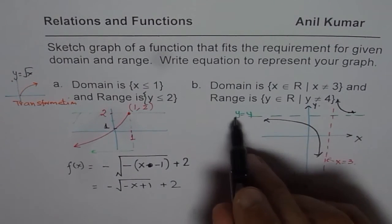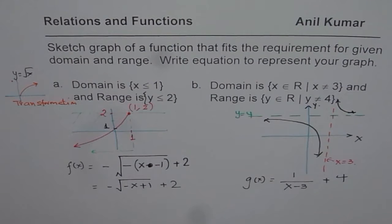And since there is a vertical translation of 4 units, we can write this as plus 4. So we get our equation.